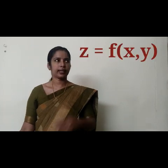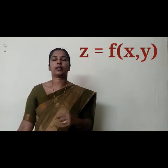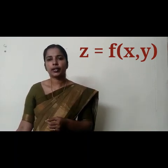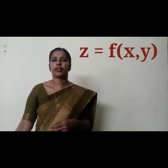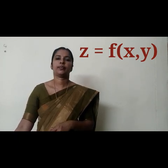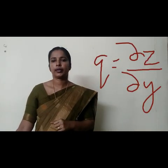Before going to this, we have to be familiar with certain notations. Here we consider z as a function of x and y, that is z = f(x, y), so z depends on the variables x and y. You can differentiate z partially with respect to x — that's dou z by dou x — and partially with respect to y — that's dou z by dou y. We use the notations: p = dou z by dou x, q = dou z by dou y.